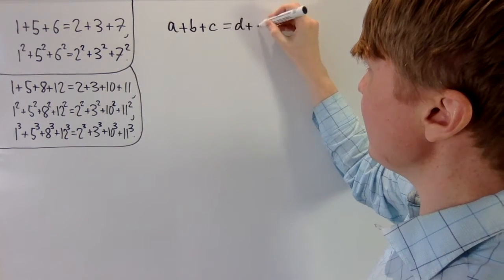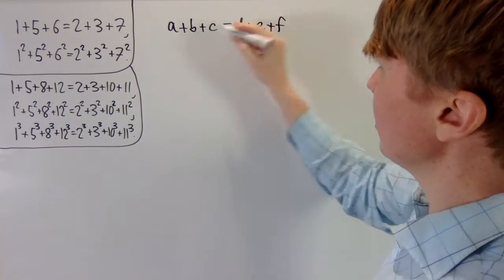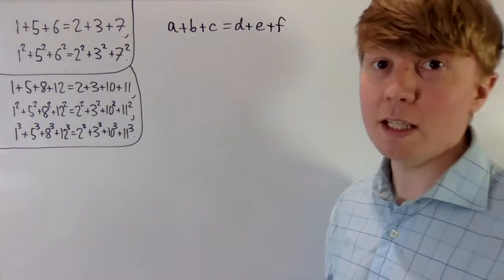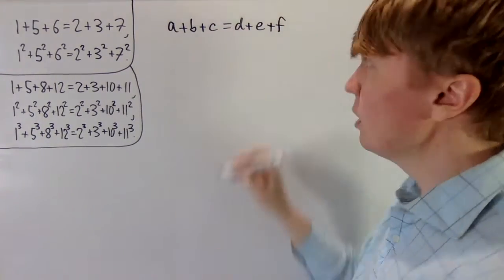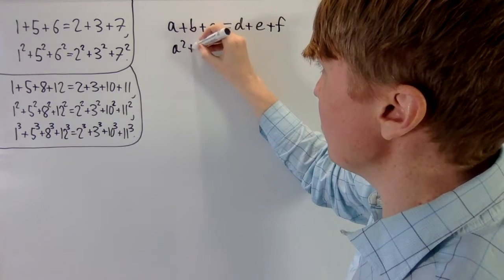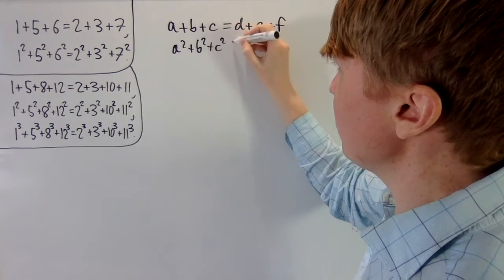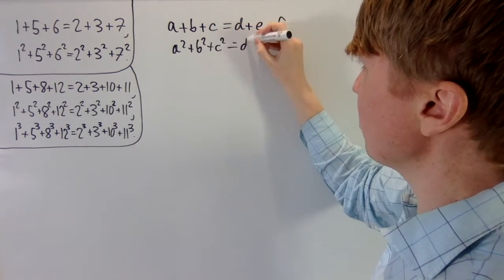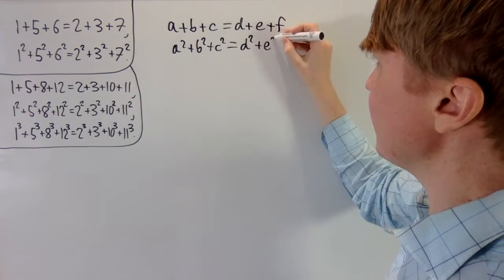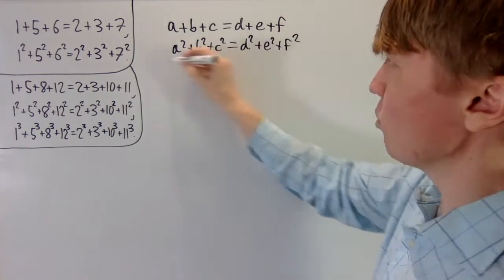We're looking for distinct positive integers a, b, c, d, e, and f such that the sum of a, b, c equals the sum of d, e, and f, and also the sum of squares: a squared plus b squared plus c squared equals d squared plus e squared plus f squared.